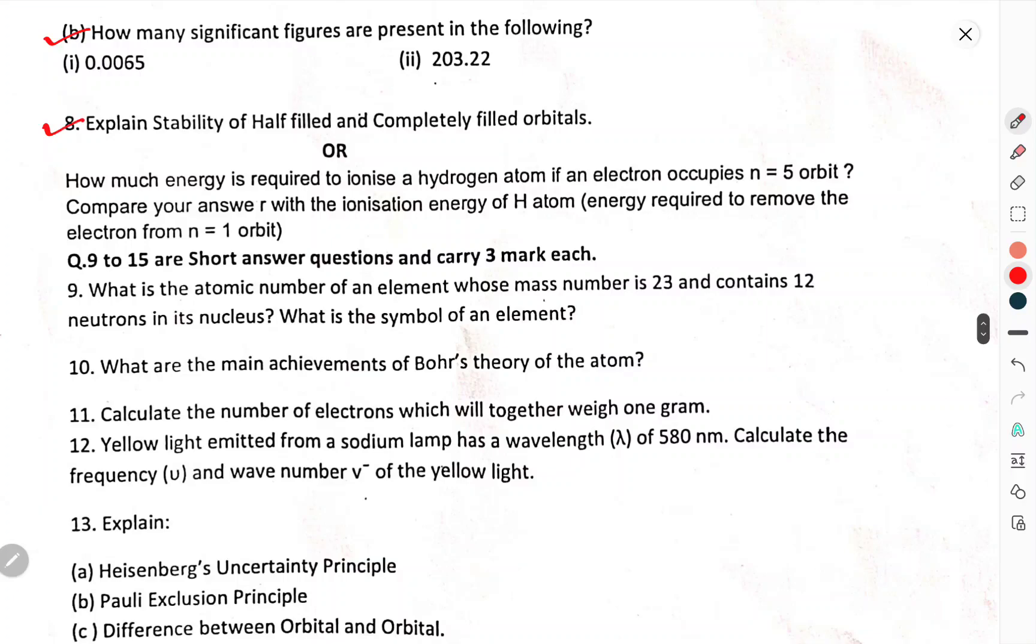Explain the stability of half-filled and completely filled orbitals. How much energy is required to ionize a hydrogen atom if an electron occupies n equals to 5 orbit? Compare your answer with the ionization energy of H atom required to remove the electron from n equals to 1 orbit.